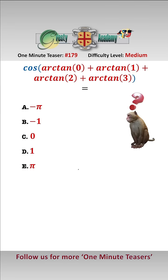Let's work out the bracket first and start with the easy ones. Arctan 0 is clearly 0. Arctan of 1 is the angle whose tangent is 1 — well, that's pi over 4.